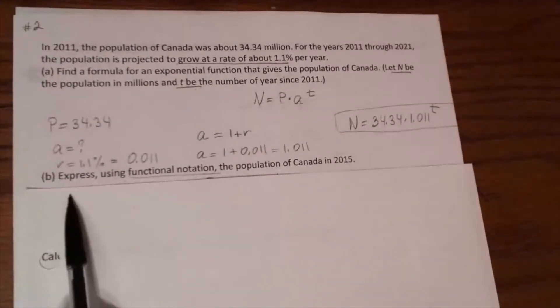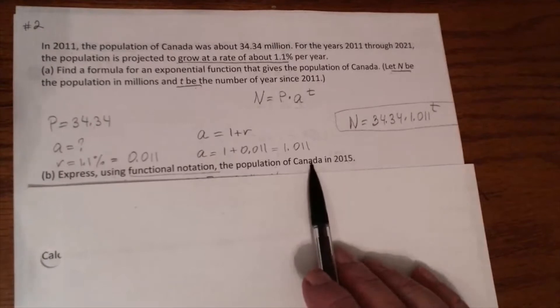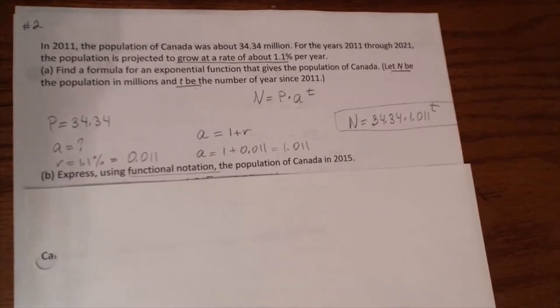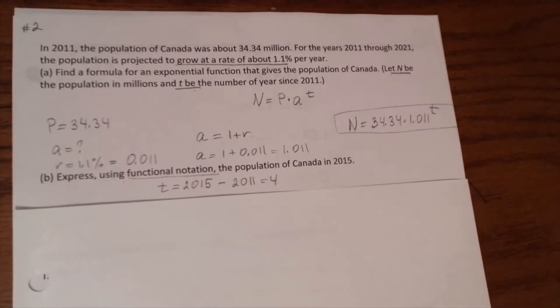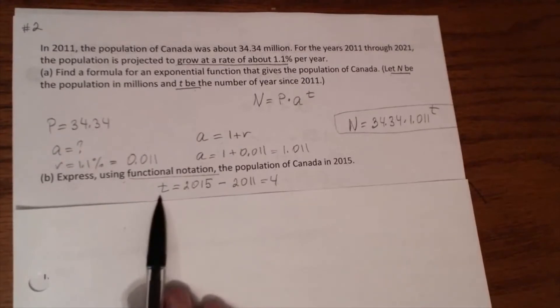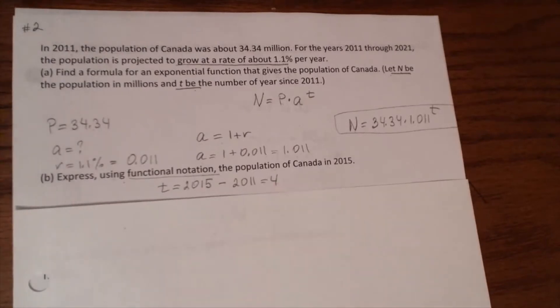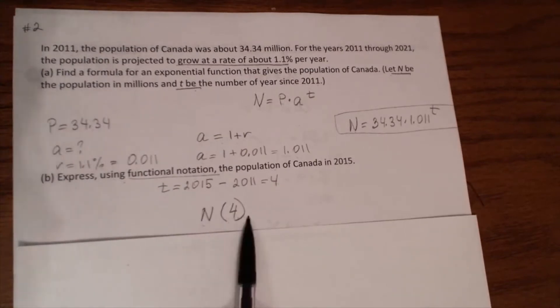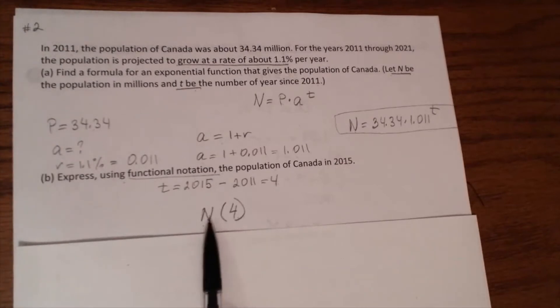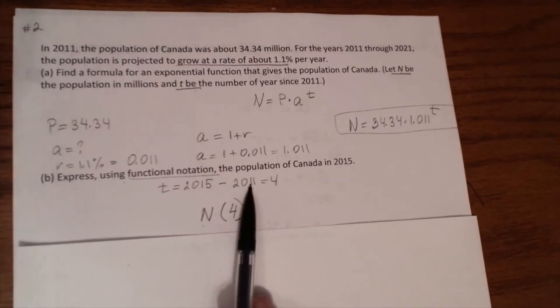Part B. Express using functional notation the population in Canada in 2015. Students like to complicate this question and it's a pretty easy one. First of all, we have to find T since 2011. 2015 minus 2011 equals 4 years. And the functional notation is N of 4. It means the population of Canada 4 years since 2011.